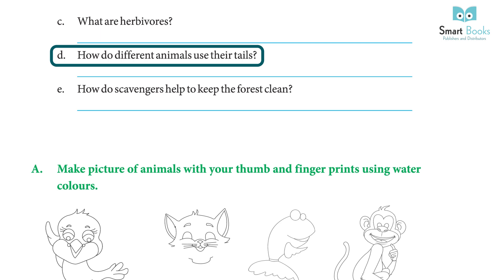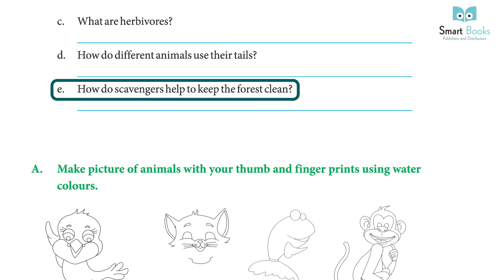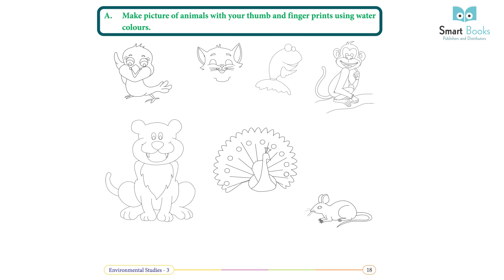D) How do different animals use their tails? A fish uses its tail for swimming and changing direction; a peacock uses its tail to dance; cows and buffaloes use their tails to fly away birds and insects; a dog wags its tail when happy or scared. E) How do scavengers help keep the forest clean? Scavengers eat the flesh of dead animals and in this way they clean the forests.